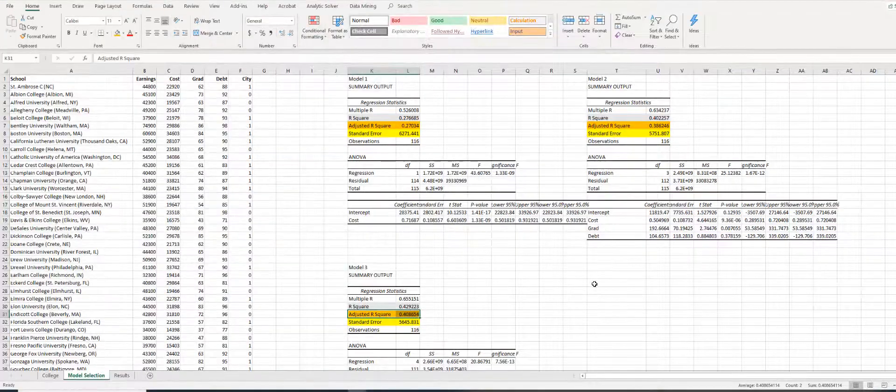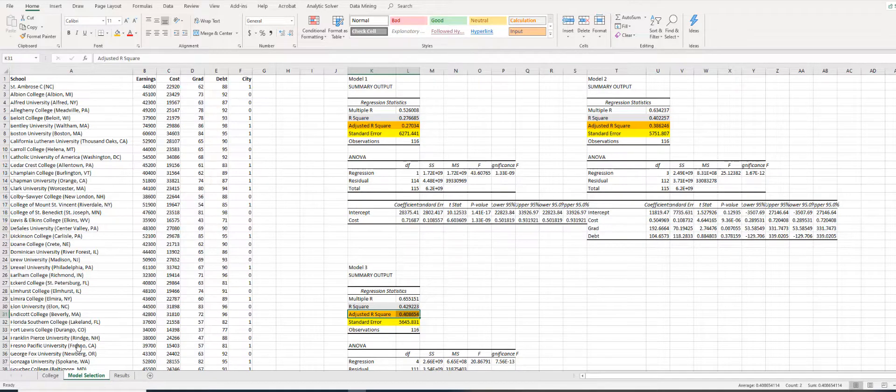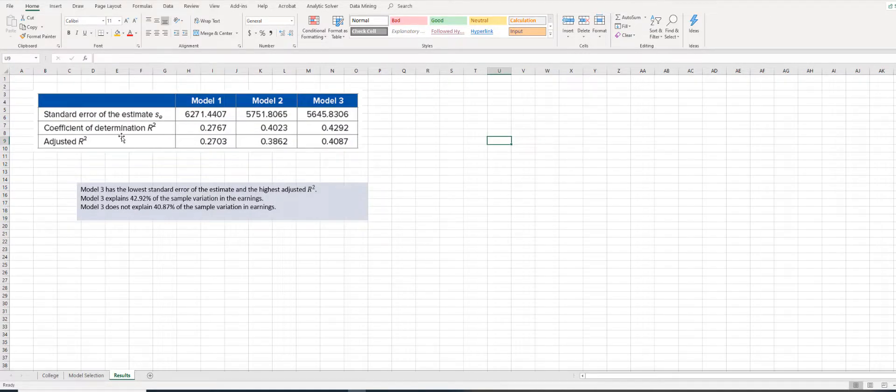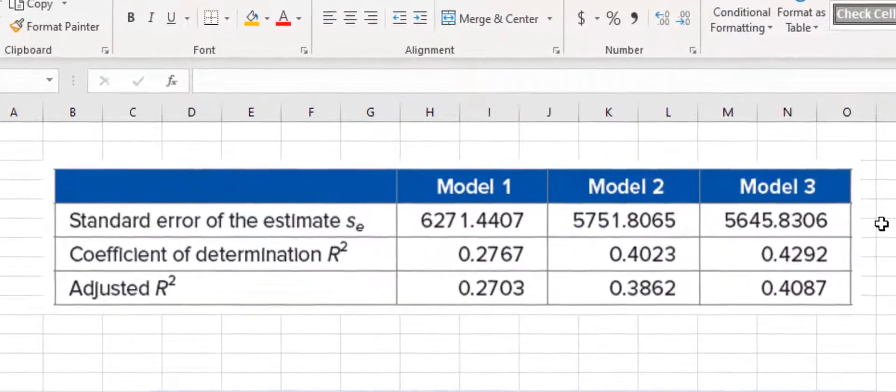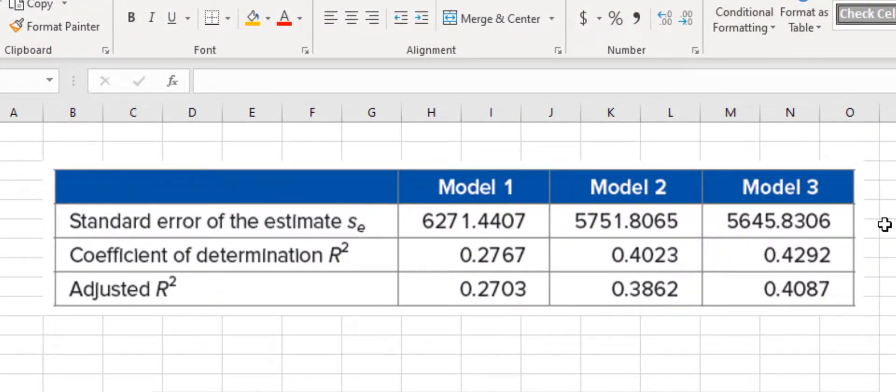Here you can see the results. I highlighted the important statistics that we need to measure goodness of fit. Here, I summarized the results in a table. When you check this table, you realize that model 3 is the best model. The reason for that is because, first of all, model 3 has the lowest standard error of the estimate and highest adjusted R-squared. Model 3 explains 42.92% of the sample variation in earnings. And model 3 doesn't explain 57.08% of the sample variation in earnings.